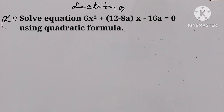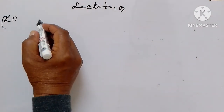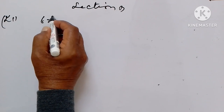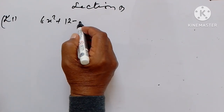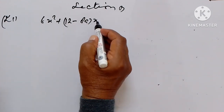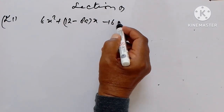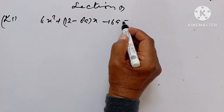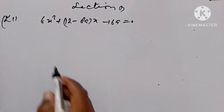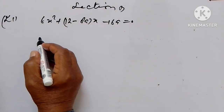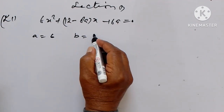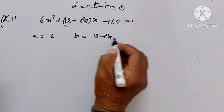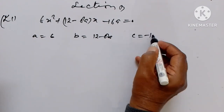Now take up question number 21, Section B, which is 6x² + (12 - 8a)x - 16a = 0. Here we see that A is equal to 6, B is equal to 12 minus 8a, and C is equal to minus 16a.